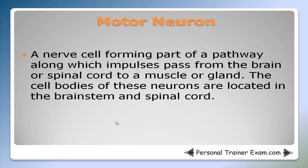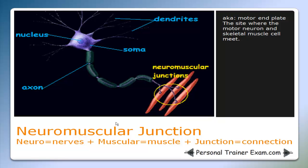A motor neuron is a nerve cell forming part of a pathway along which impulses pass from the brain or spinal cord to a muscle or gland. The cell bodies of these neurons are located in the brain stem and spinal cord. The neuromuscular junction — also called the motor end plate — is the site where the motor neuron and the skeletal muscle cell meet. Breaking it down: neuro means nerve, muscular means muscle, and junction means connection, so this is the connection between the nerve fiber and the skeletal muscle fibers.